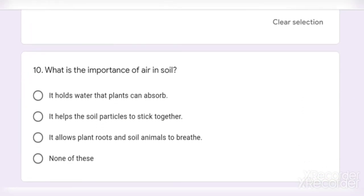Question number 10. What is the importance of air in soil? Option 1: It holds water that plants can absorb. Option 2: It helps the soil particles to stick together. Option 3: It allows plant roots and soil animals to breathe. And option 4: None of these. And the correct answer is Option 3, It allows plant roots and soil animals to breathe.